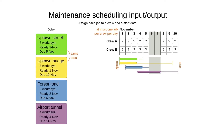So here we have a maintenance scheduling problem where we need to do road maintenance. We have four jobs — an uptown street job and a few others. Each of these jobs takes a number of working days to complete. For example, the uptown street job takes three working days, and these jobs have a ready date and a due date. The ready date is the earliest moment they can start, and the due date is the last moment they can finish.